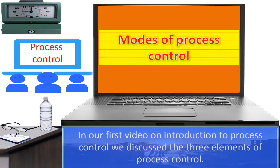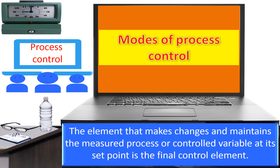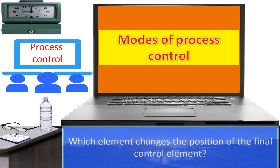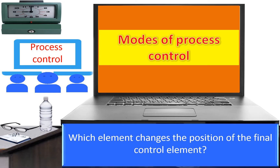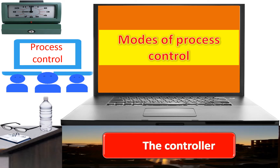In our first video on Introduction to Process Control, we discussed three elements of process control. The element that makes changes and maintains a measured process or control variable at its set point is the final control element, or the control valve. But which element changes the position of the final control element? It is the controller.